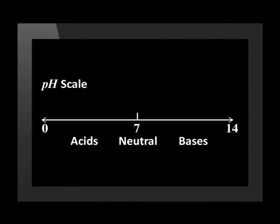In Grade 9, we studied the concept of pH and how it helps us to determine whether a substance is an acid or a base. The pH scale ranges from 0 to 14. Acids have a pH lower than 7, and bases have a pH higher than 7. Neutral substances are neither acids nor bases and have a neutral pH of 7.